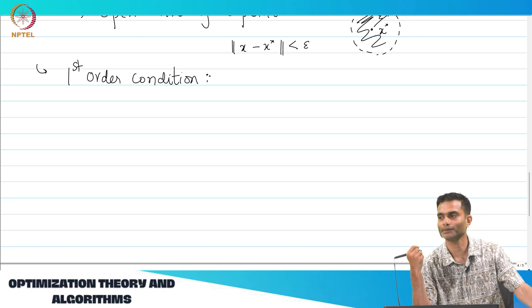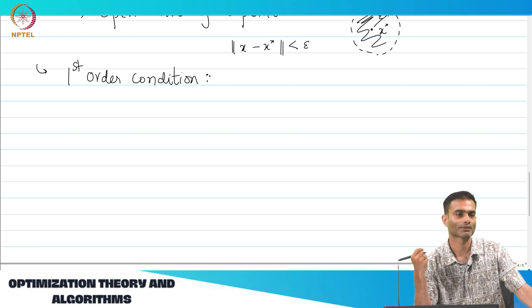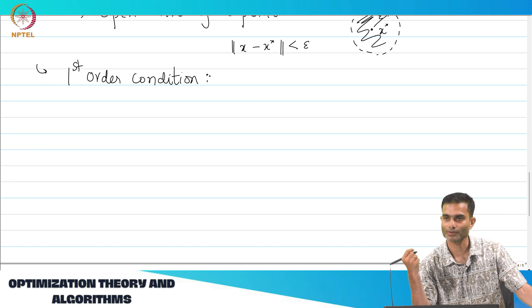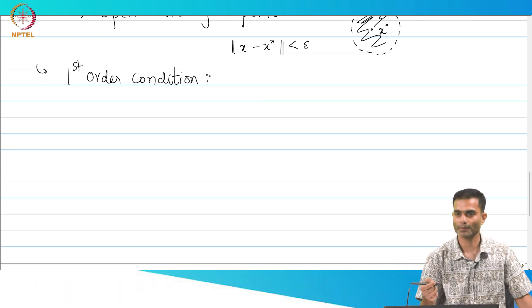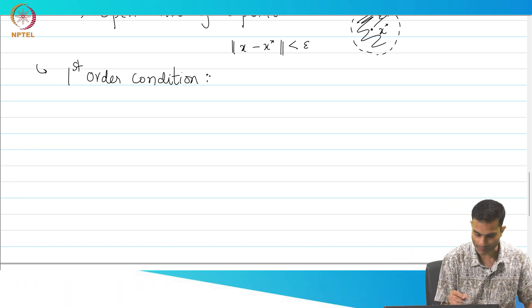What do you expect is going to happen in the multivariate case? Grad f(x*) is going to be equal to 0, right? That is it. There is no surprises there, but let us write it down formally.